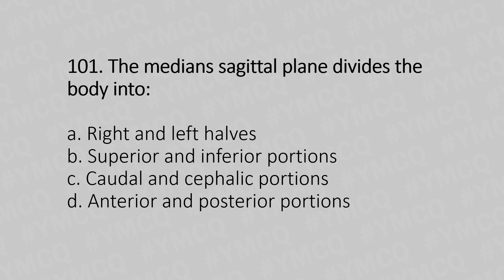The median sagittal plane divides the body into: Option A, right and left half. Option B, superior and inferior portion. Option C, caudal and cephalic portion. Option D, anterior and posterior portion. And the answer is Option A, right and left halves.